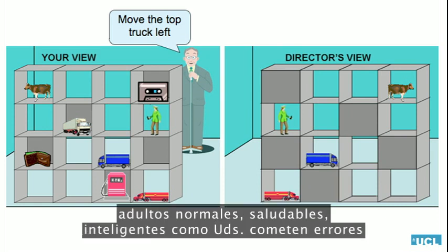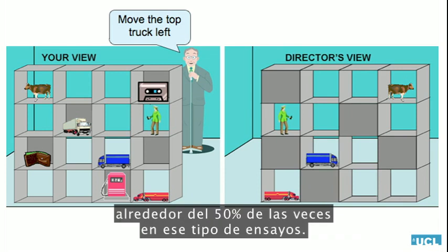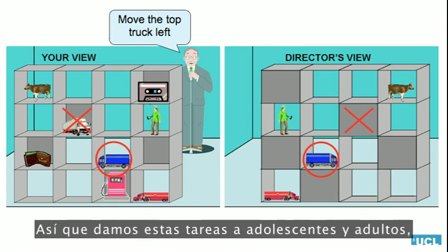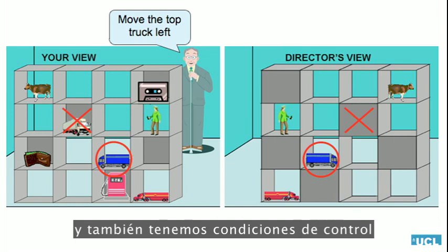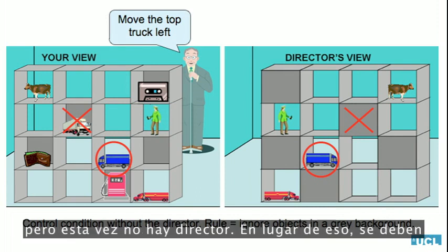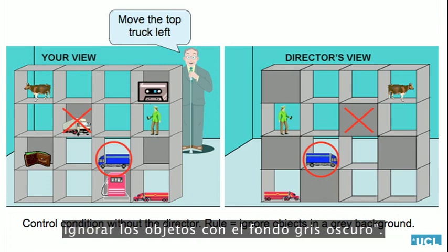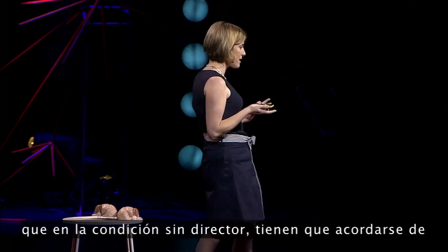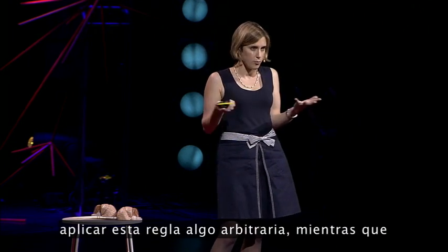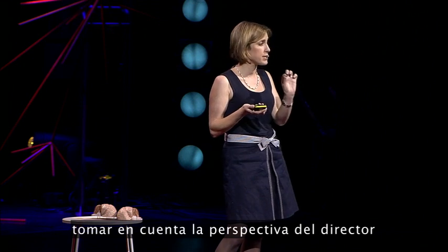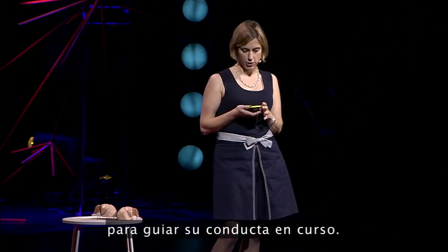Believe it or not, normal, healthy, intelligent adults make errors about 50% of the time on that kind of trial — they move the white truck instead of the blue truck. We give this task to adolescents and adults, and we also have a control condition where there's no director. Instead, we give people a rule: ignore objects with a dark gray background. This is exactly the same condition, only in the no-director condition, they just have to remember to apply this somewhat arbitrary rule, whereas in the director condition, they have to take into account the director's perspective to guide their ongoing behavior.